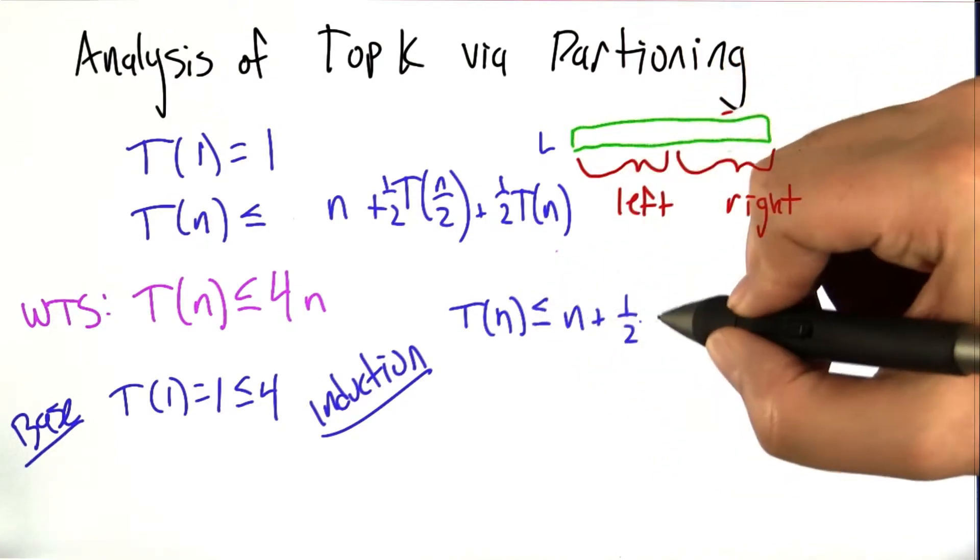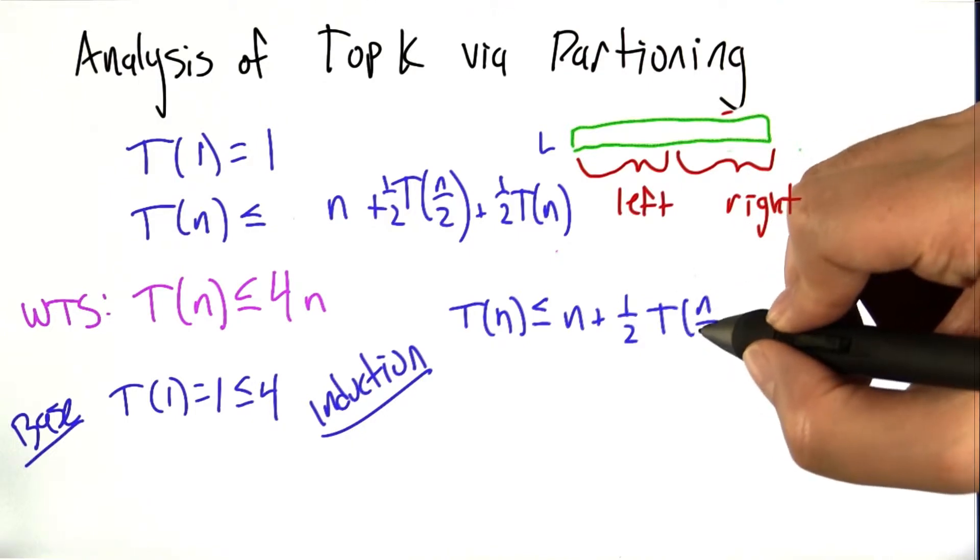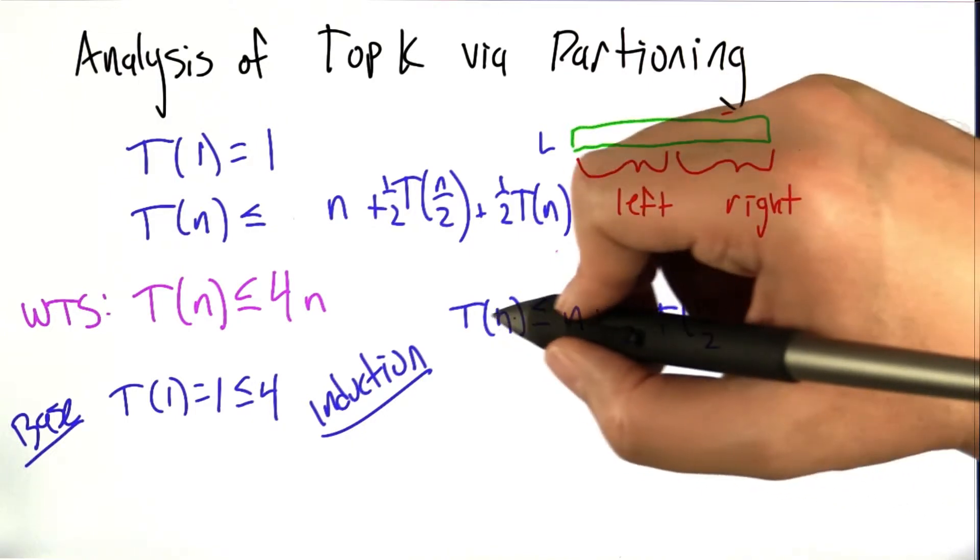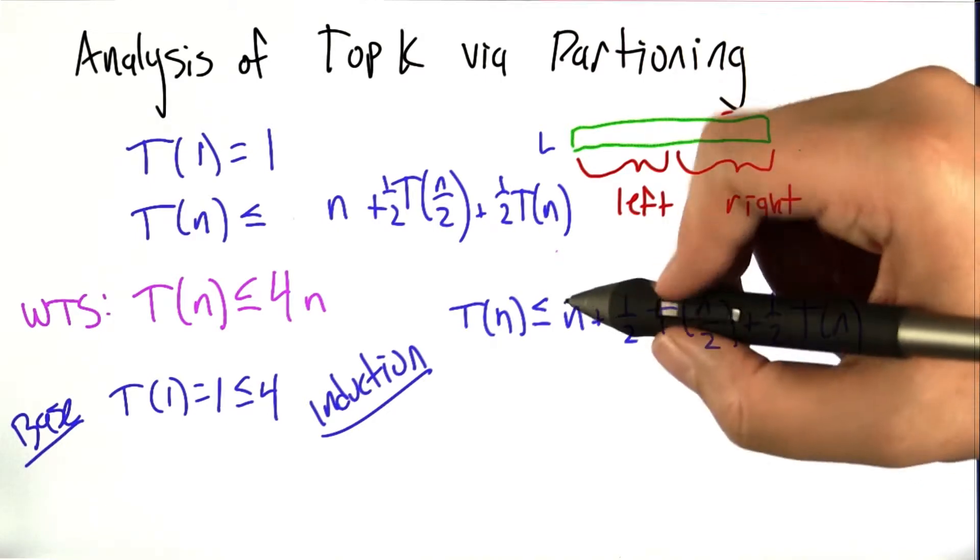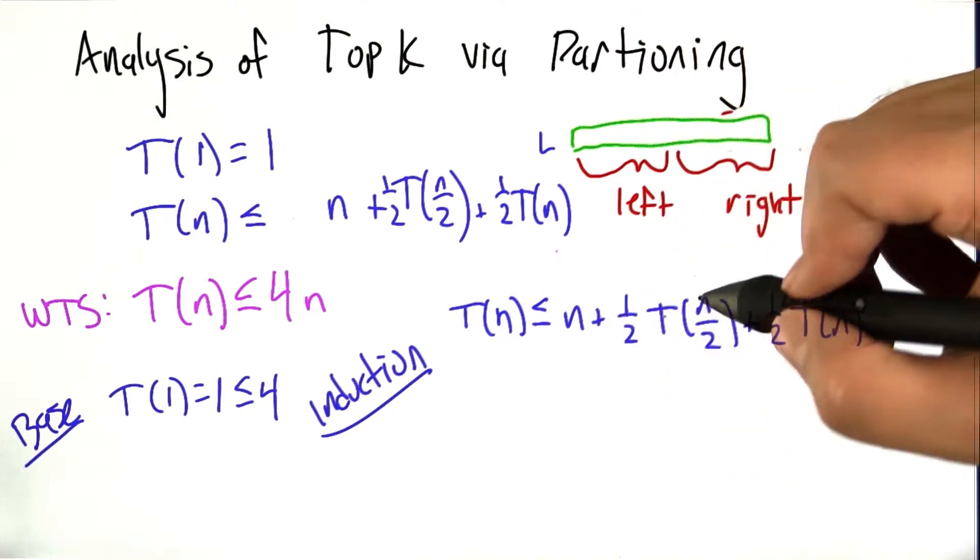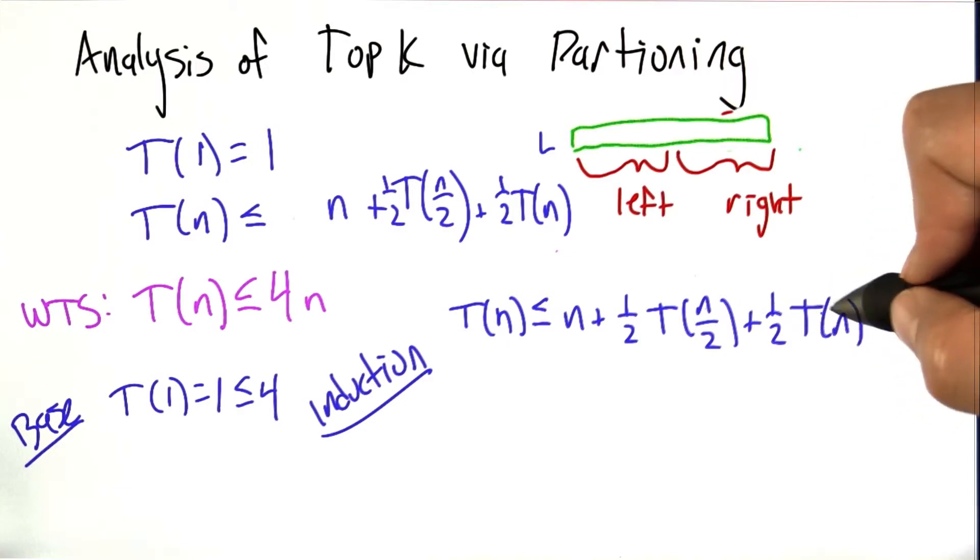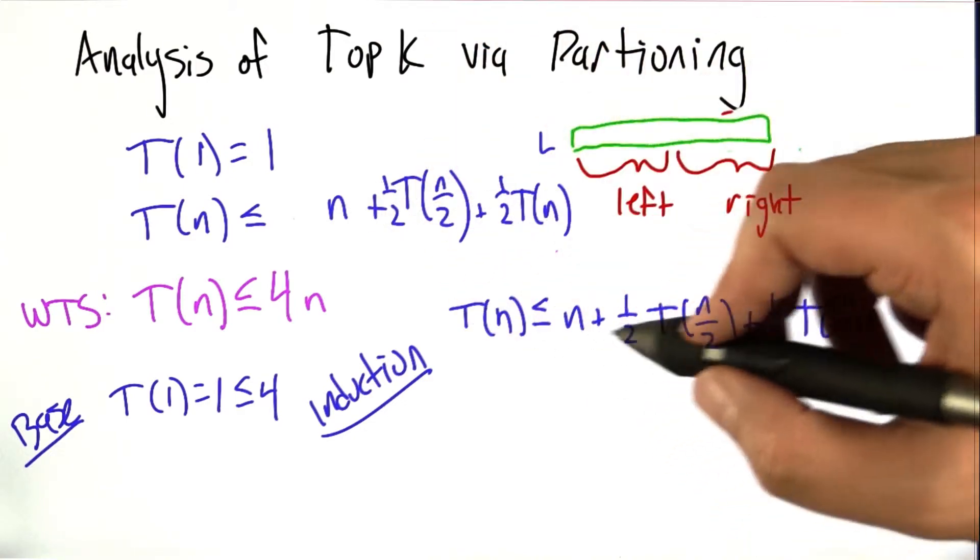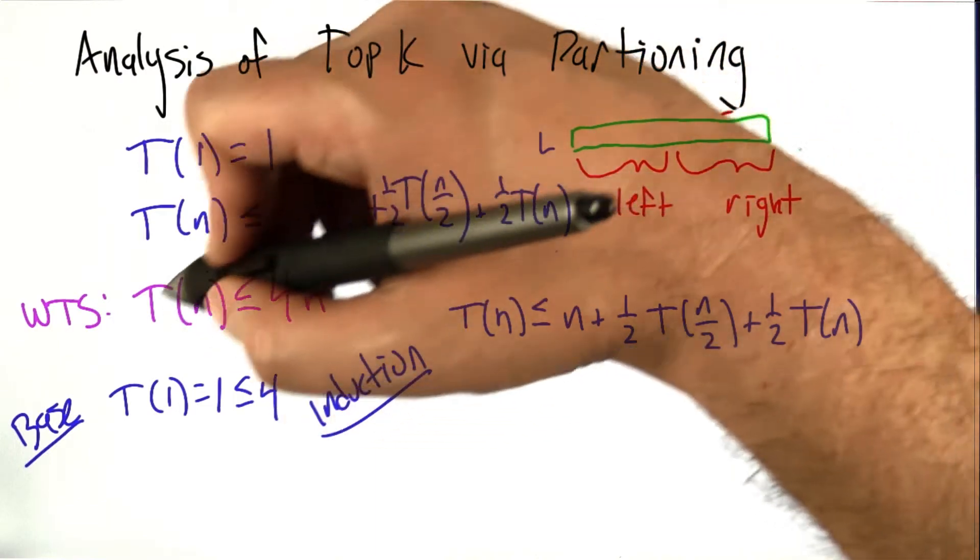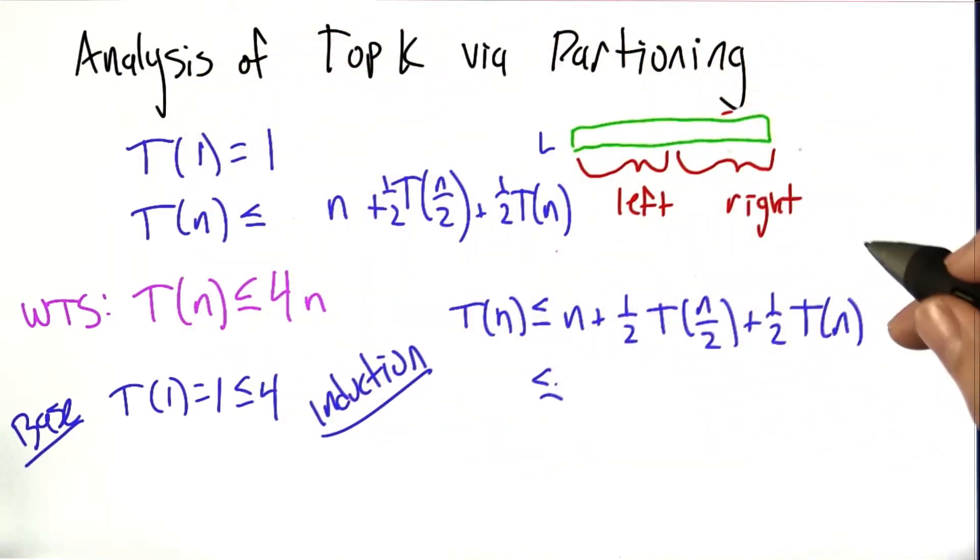For our inductive step, we know from the structure of the algorithm that the time it takes to handle an input of size n is, on average, going to be less than or equal to n plus a half T of n over 2 plus a half T of n, just like we argued before. And now we're going to use our inductive hypothesis that T of n is less than or equal to 4n to get an upper bound on this quantity.